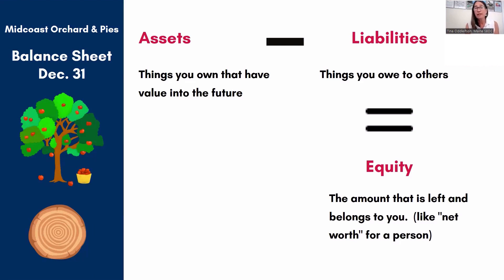Liabilities are just things that you owe other people — credit card balances, and what's called accounts payable. Accounts payable tracks bills you owe other vendors where you've purchased things but haven't paid them yet. Then there are bigger liabilities like mortgages and equipment loans that happen over a period of time.